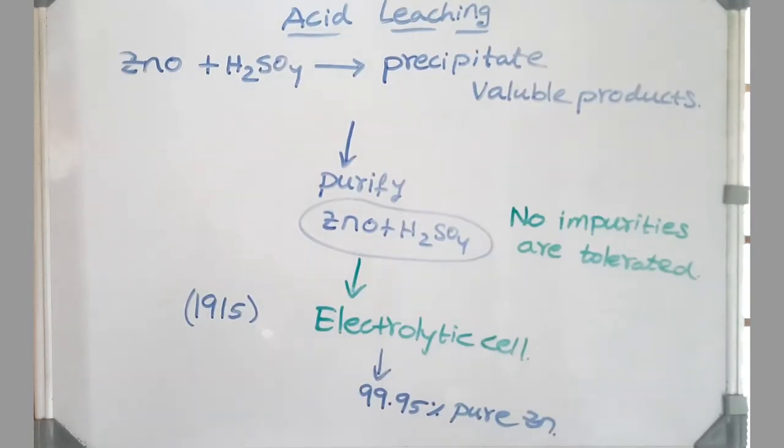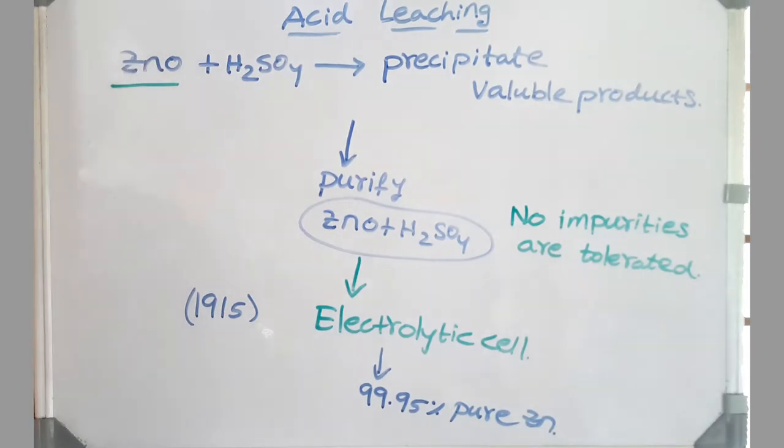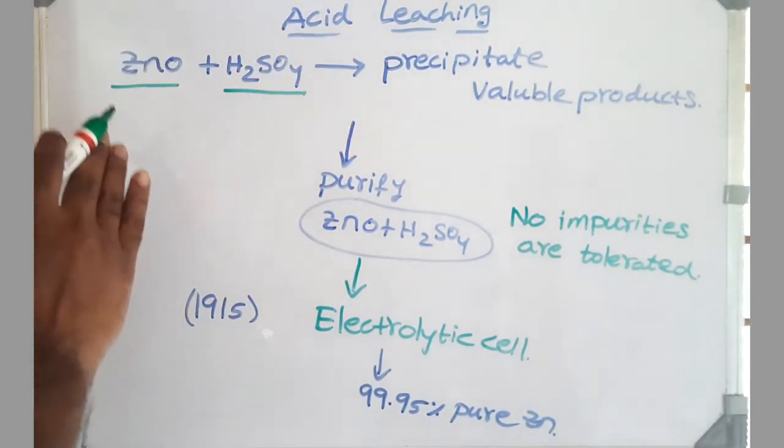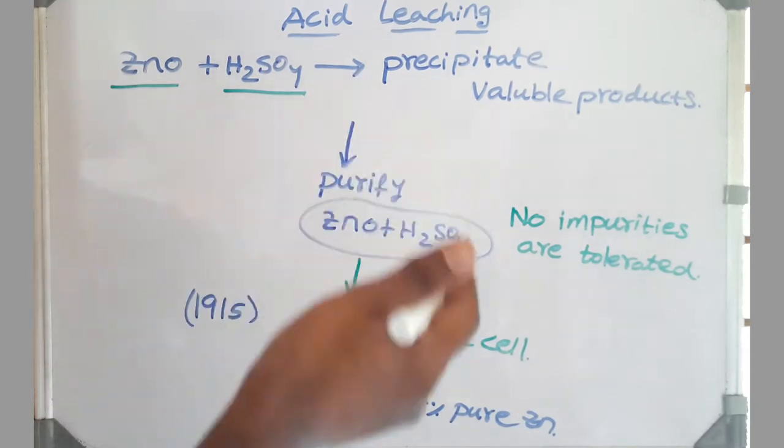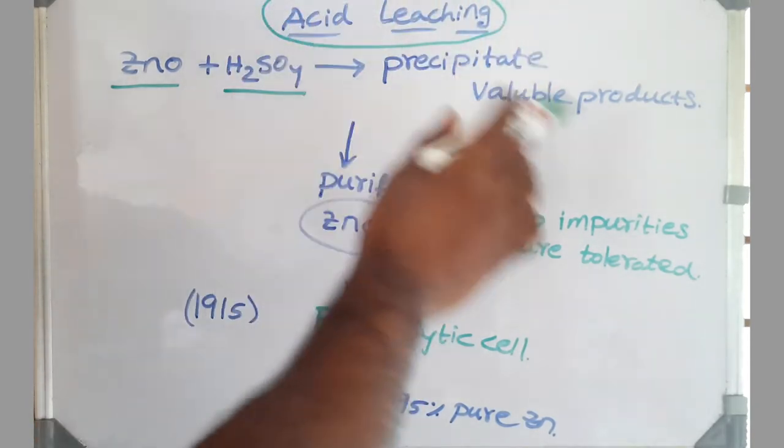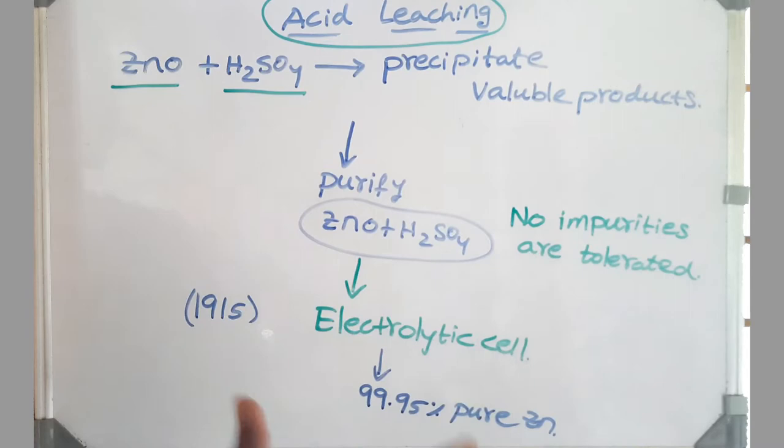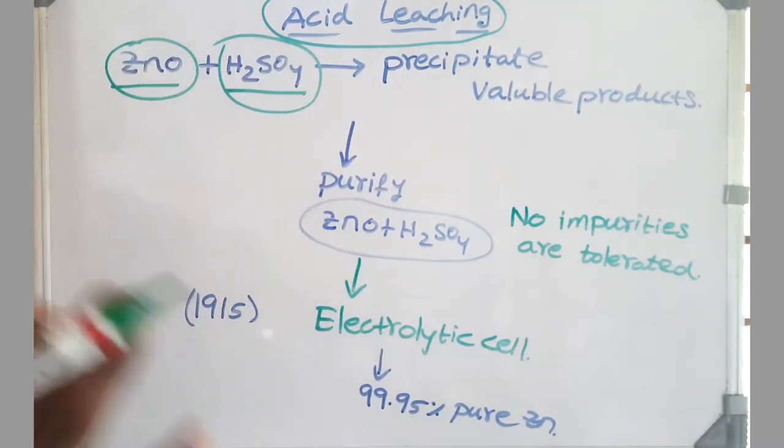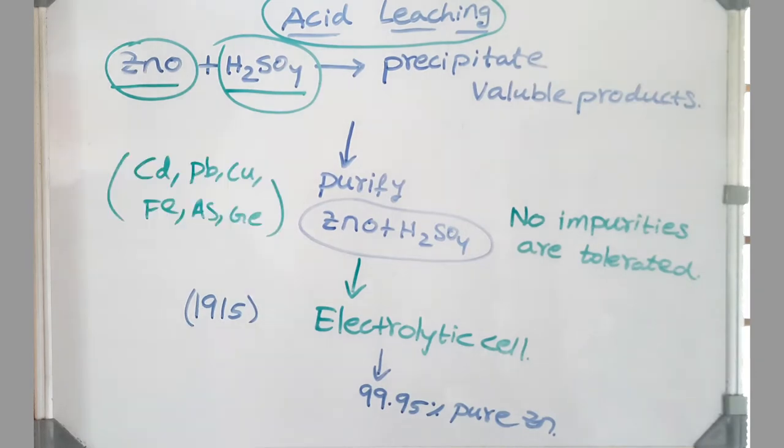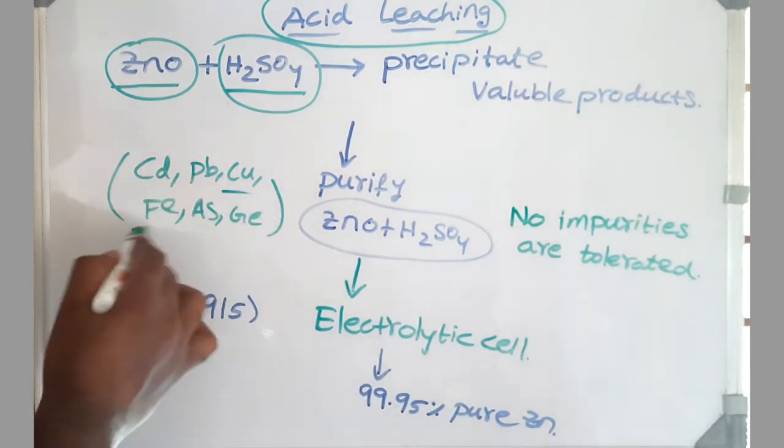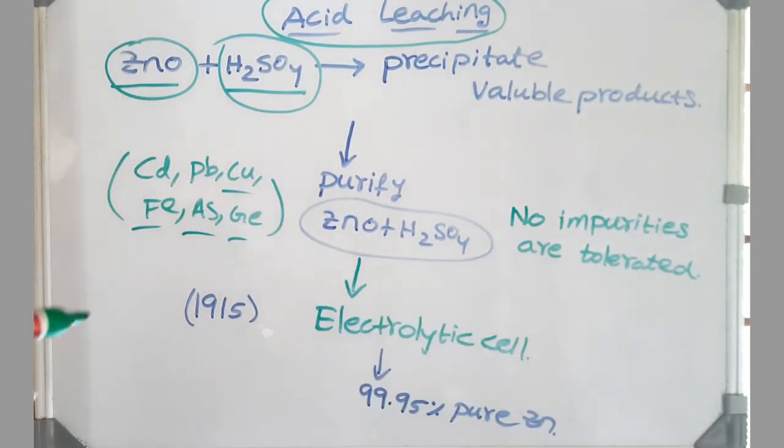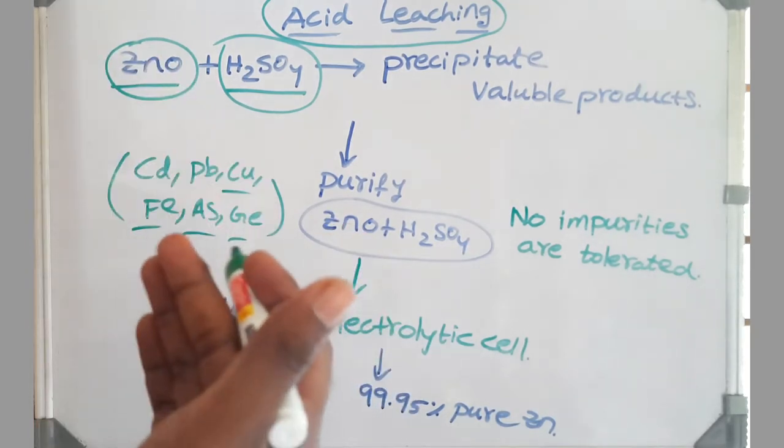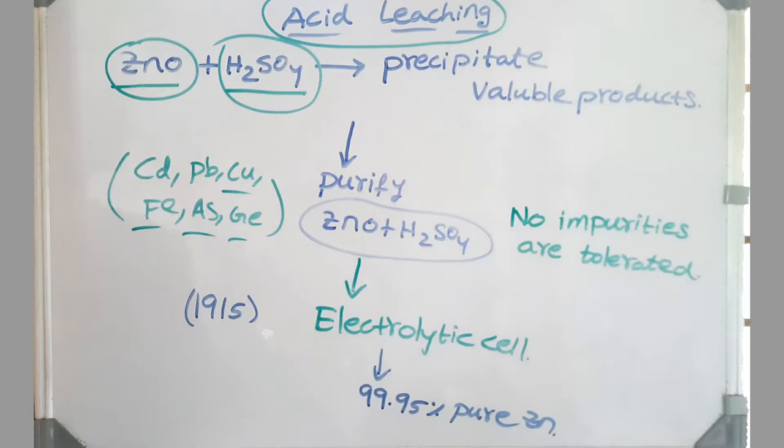Let's look at another process, friends. Zinc oxide which we got from roasting is dissolved in acid. We call this process acid leaching: ZnO + H2SO4. Here through acid leaching we precipitate all valuable products, then we purify this ZnO-H2SO4 solution. We remove all possible elements: cadmium, lead, copper, iron, arsenic, germanium - we remove all these before electrolysis.